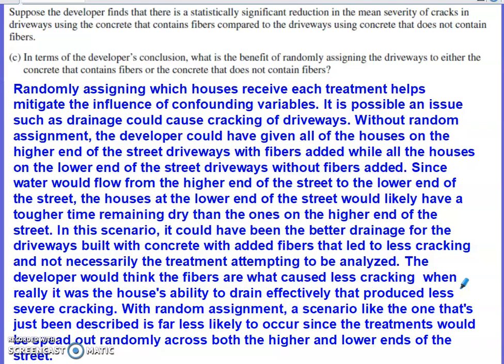Part C says the developer finds a statistically significant reduction in the mean severity of cracks in driveways using concrete with fibers compared to driveways using concrete without fibers. Part C asks: what is the benefit of randomly assigning driveways to either type of concrete? In most situations like this, you want to talk about the advantage of randomization and also why the alternative has a disadvantage — make sure you talk about both sides of the design.